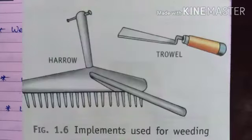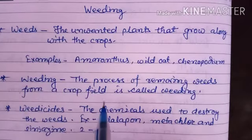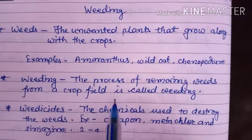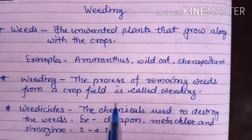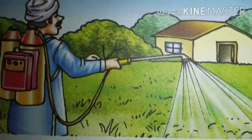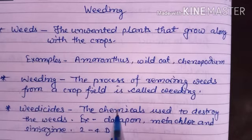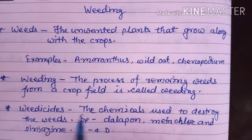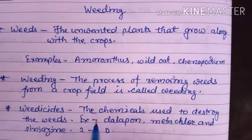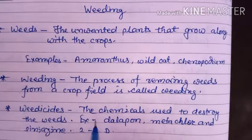Weeding is also done by spraying special chemicals called herbicides or weedicides with the help of a sprayer. They destroy the weeds but do not affect the main crops. However, weedicides are poisonous and the grains must be properly washed before being consumed.